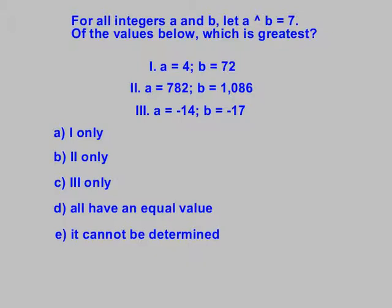For number 1, a equals 4, b equals 72. Number 2, a equals 782, b equals 1086. And 3, a equals negative 14, b equals negative 17. Then we have our answer choices to choose from.